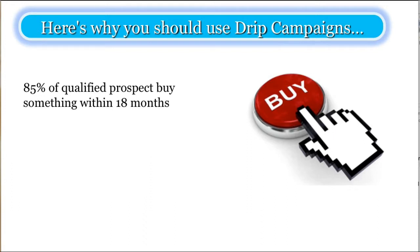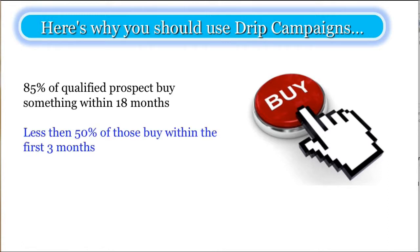Here's why you should use drip campaigns. This is an interesting fact: 85% of qualified prospects buy something within 18 months. They might not be buying from you, but they will be buying something within 18 months — this is an average across many different industries, so your industry might be a bit longer or shorter. Only 50% of those people buying will buy within the first three months. That means you need to stay in touch with those people for three months and beyond, because that is where another 50% of the opportunity lies.